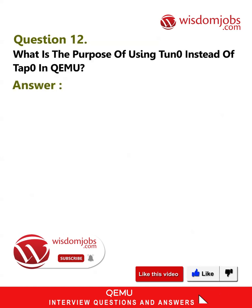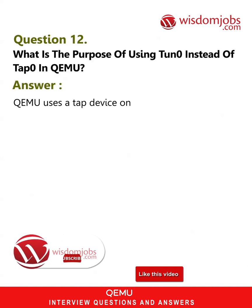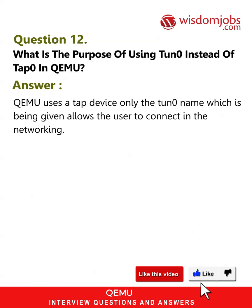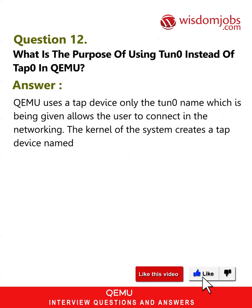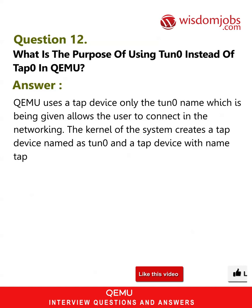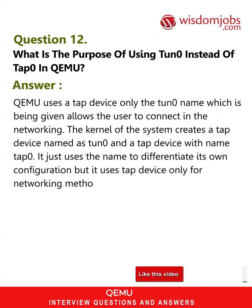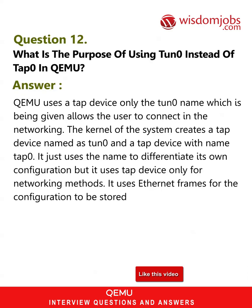Question 12: What is the purpose of using tun0 instead of tap0 in QEMU? Answer: QEMU uses a TAP device only. The tun0 name allows the user to connect in the networking. The kernel of the system creates a TAP device named tun0 and a TAP device named tap0. It just uses the name to differentiate its own configuration, but it uses the TAP device only for networking. It uses Ethernet frames for the configuration to be stored.